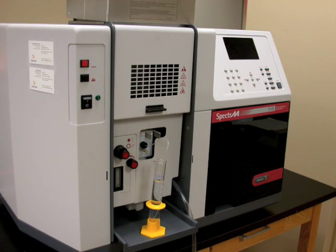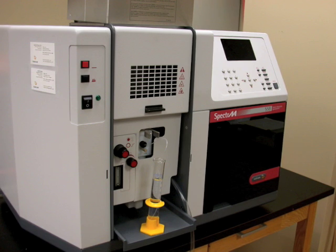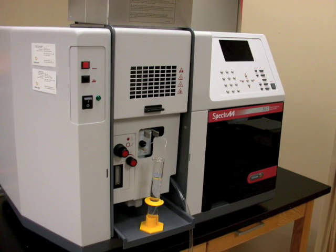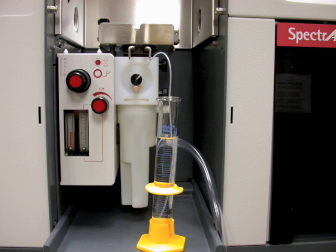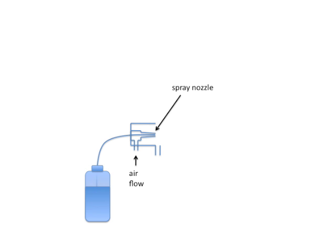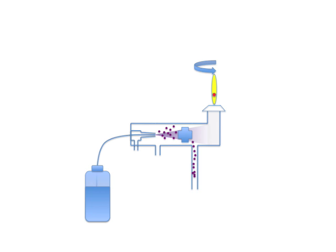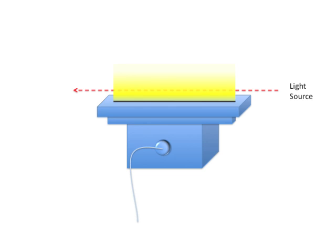Here are basic operating instructions for the department's Varian Model 5055 Atomic Absorption Spectrometer. Solution is aspirated from your container through a plastic capillary tube into a mixing chamber. The capillary is attached to a needle that forms part of a spray nozzle. Compressed air forms an aerosol of tiny droplets that mix with acetylene in the chamber. A baffle knocks down all but the tiniest droplets, which go into the flame to be detected. A light beam from a hollow cathode lamp is directed through the flame for a total length of 10 cm.